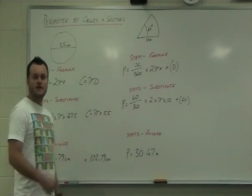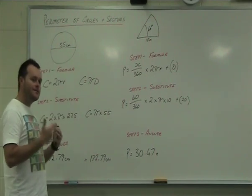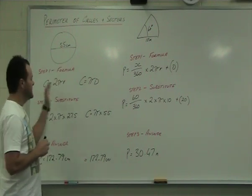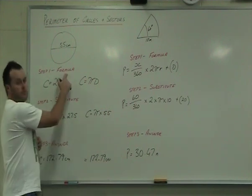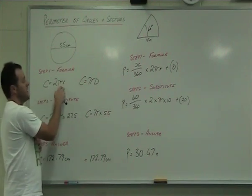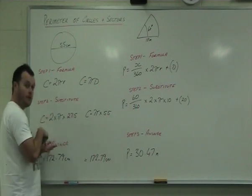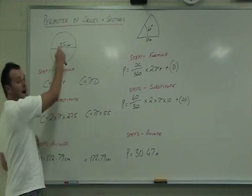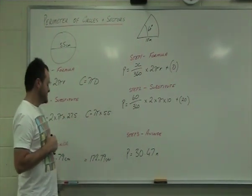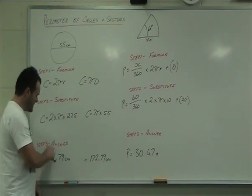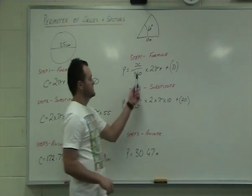Hope you had a good go at those. The first one is a nice easy one — a circle with diameter 55. Look at what you're given. Step one: formula — C equals 2πr or C equals πd. Step two: substitute in — 2 times pi times 27.5 (half of 55), or pi times 55. Step three: the answer is 172.79 centimetres.